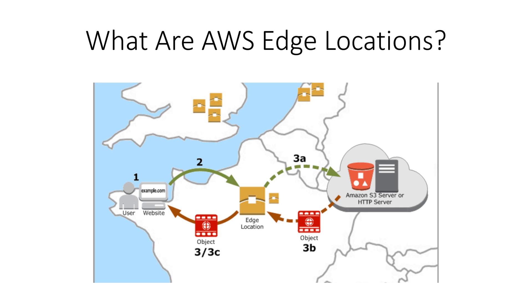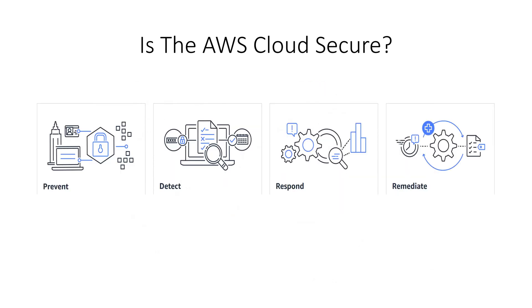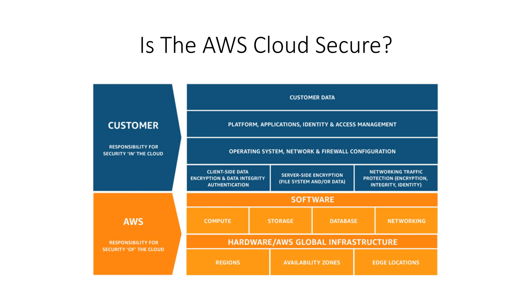Is the AWS cloud secure? AWS implements strict controls, builds automated security systems, and undergoes third-party audits to confirm security and compliance. AWS infrastructure is monitored 24/7 to help ensure the confidentiality, integrity, and availability of your data. All data flowing across the AWS global network that interconnects AWS data centers and regions is automatically encrypted at the physical layer before it leaves AWS secured facilities.